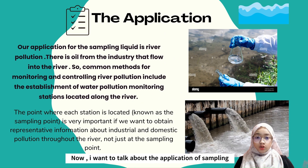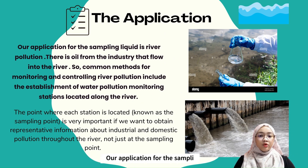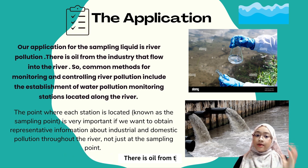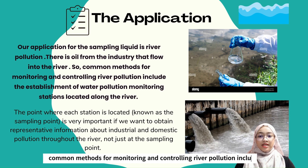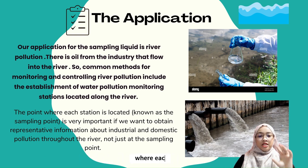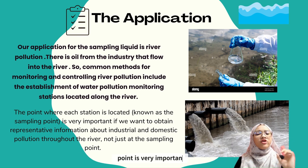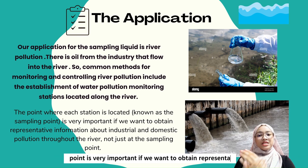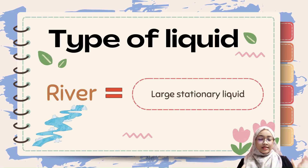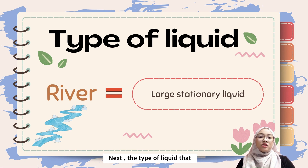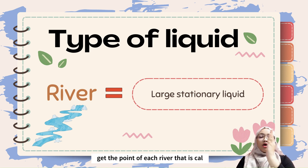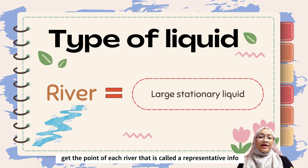Now I want to talk about the application of sampling liquid. Our application for sampling liquid is river pollution. There is oil from industry that flows into the river. A common method for monitoring and controlling river pollution includes the establishment of water pollution monitoring stations located along the river. The point where each station is located — known as the sampling point — is very important. If we want to obtain representative information about industrial and domestic pollution throughout the river, not just at the sampling point, the type of liquid we investigate is a river, which equals a large stationary liquid. That is why we have to collect data at multiple points along each river — this is called representative information.